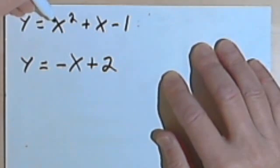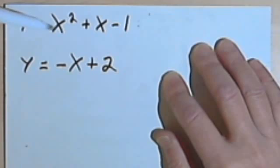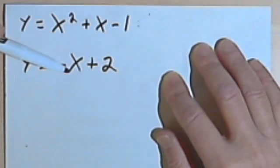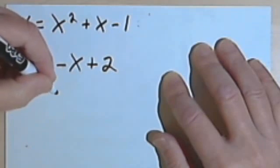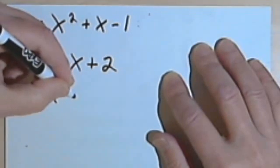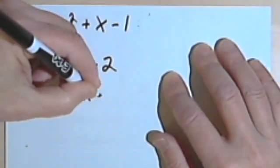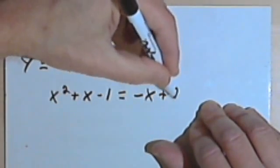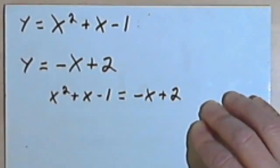Well, a really simple thing to do would be when you look at the equations you realize they both begin with y equals. Well, if the right sides, the x squared plus x minus 1 and the negative x plus 2 are both equal to y, then they must be equal to each other. So let's just make them equal to each other. I'm just gonna write x squared plus x minus 1, that's the right side of the first equation, equals negative x plus 2. That's the right side of the second equation.